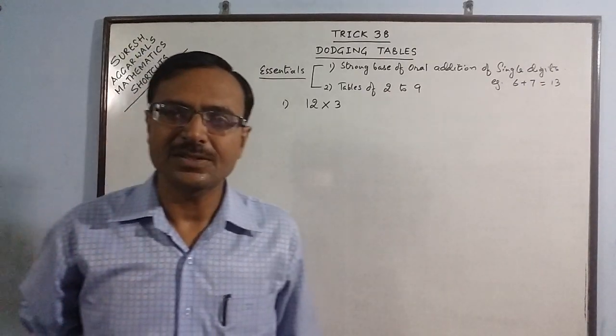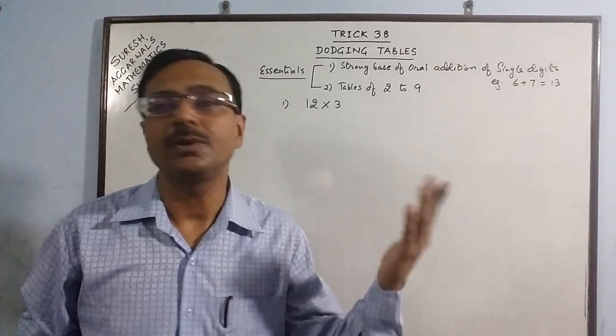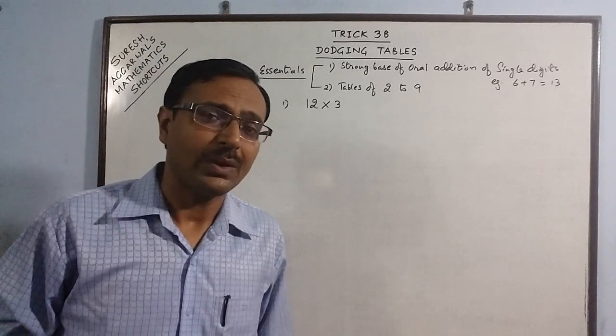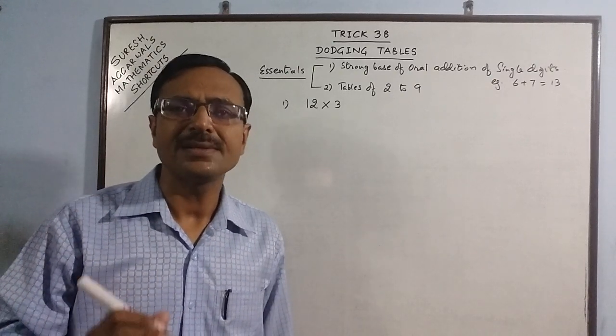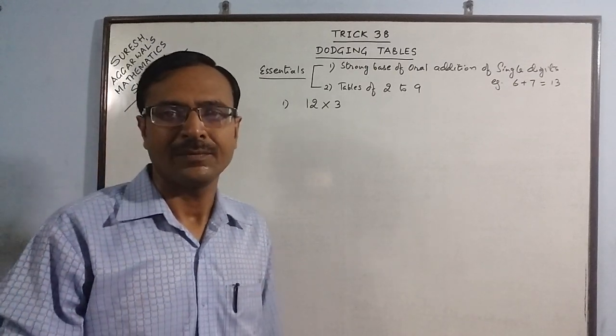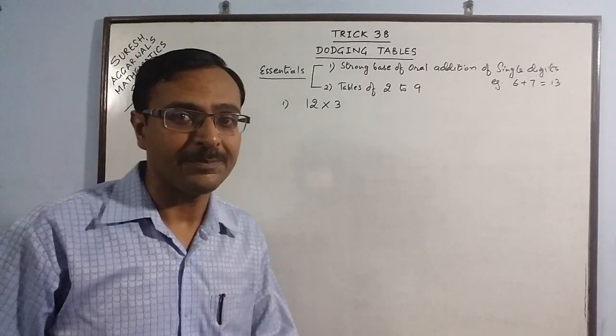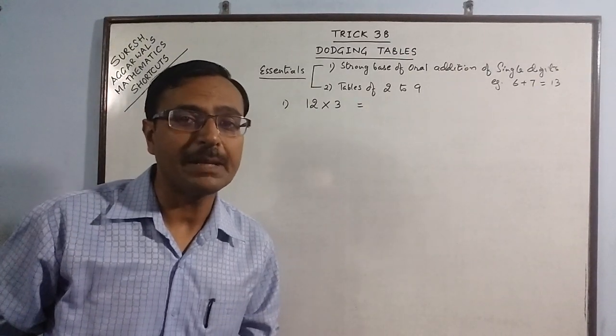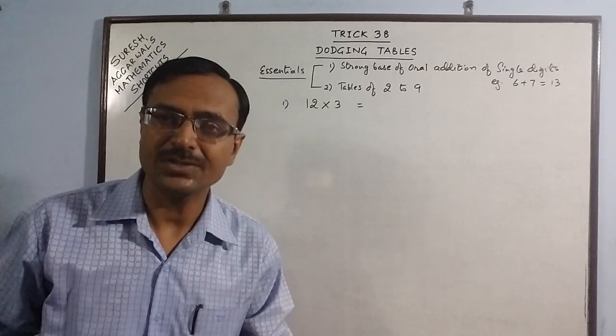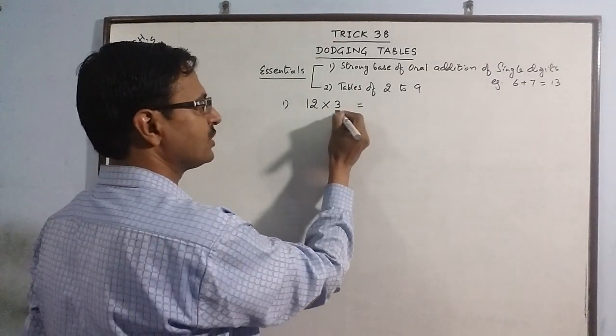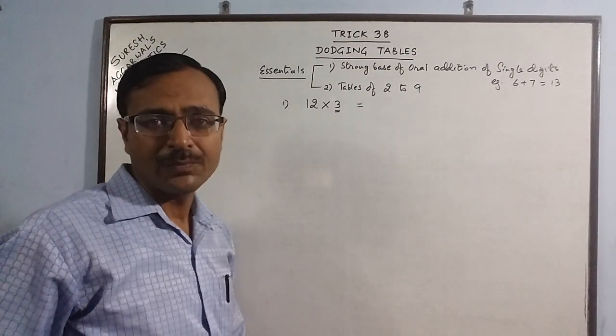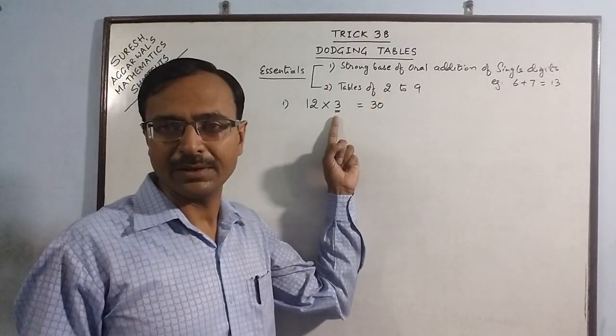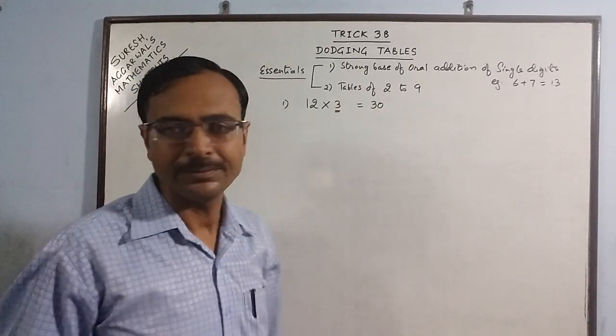If the child is asked what is 12 times 3, he starts counting: 12 ones are 12, 12 twos are 24. If the teacher applies a small concept, he can teach the child to write this product directly. The first step is: the number here is 3, so he writes 3 and puts a 0. Whatever number is there, he puts a 0 in front of that number.